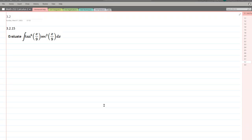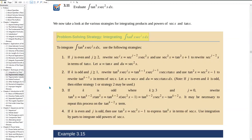We're going to evaluate an integral: tangent to the sixth power times secant squared. This comes from section 3.2 in the book, so we're going to look at the book for the strategy to use.